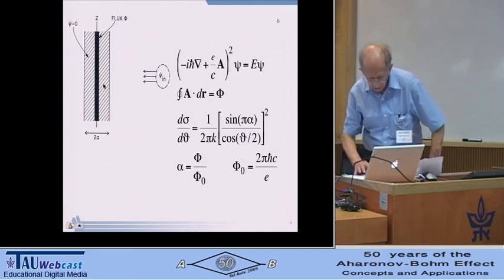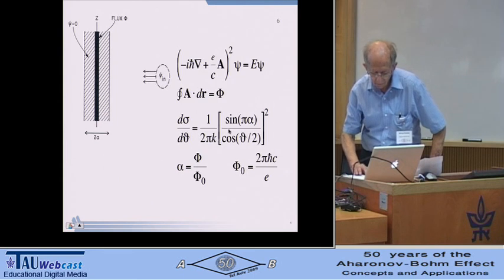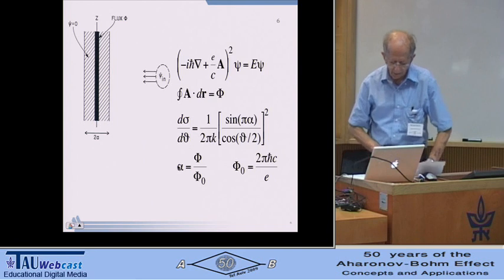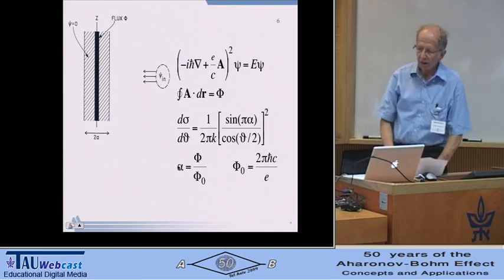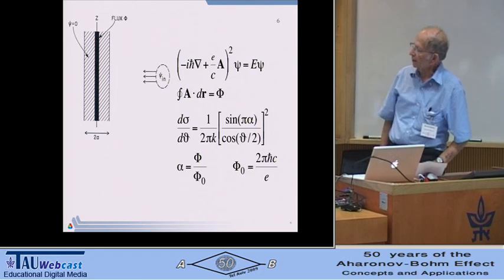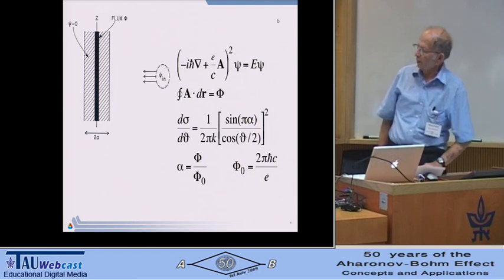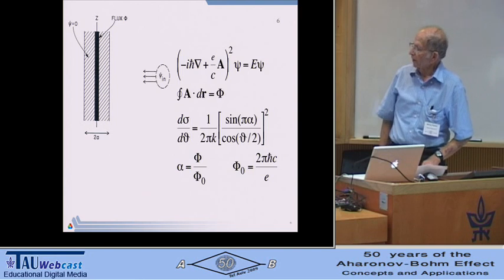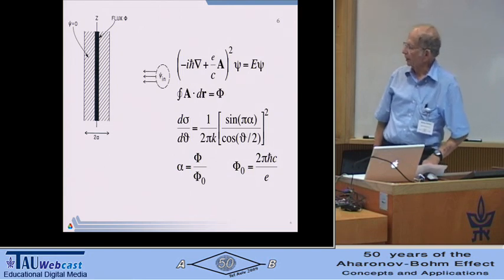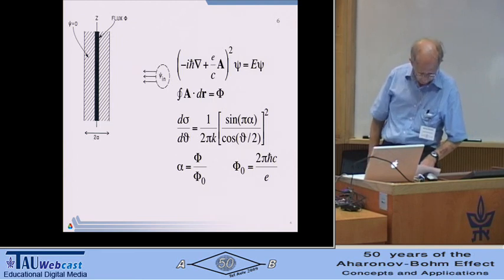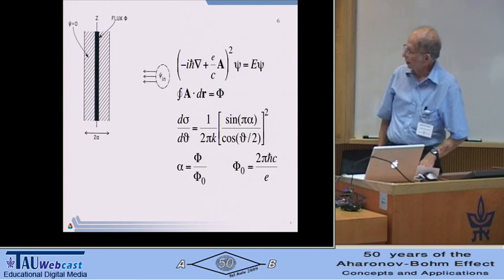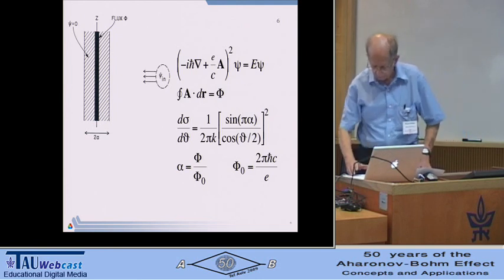Here represented by, it depends upon it here. Here it's represented by alpha, which is the flux divided by London's unit. Aharonov and Bohm in their paper actually found this result exactly in the limit as A divided by the wavelength goes to zero. But if you do that with finite A, the result is changed only a little. And the main point remains that the scattering does, of course, depend upon the flux. And that was the thing that initially mystified people.